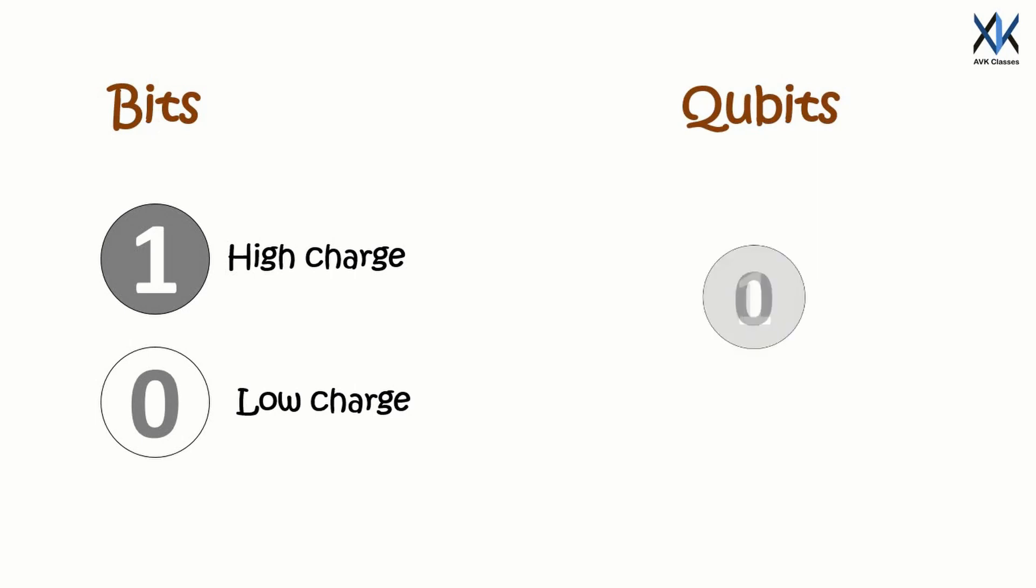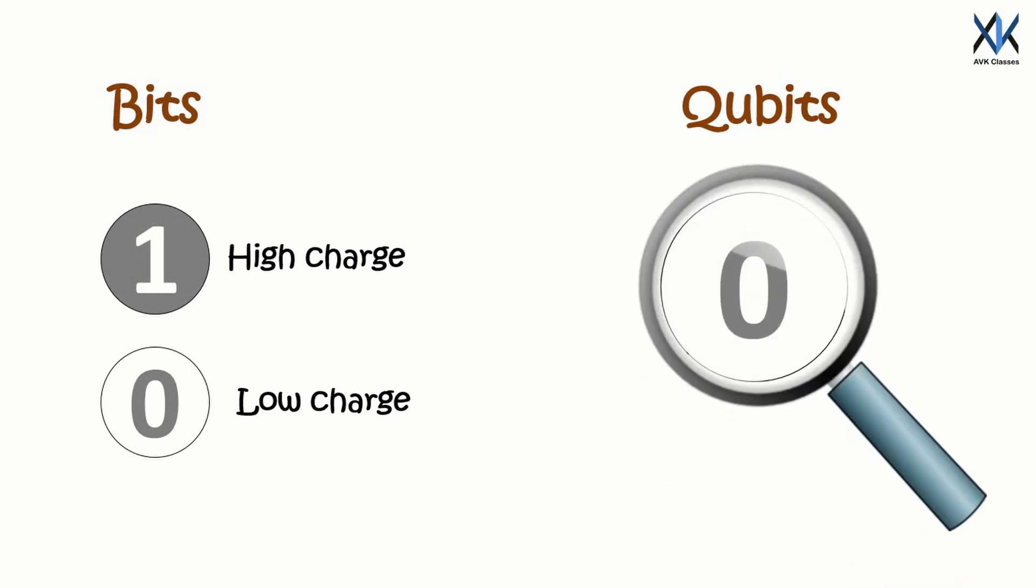Qubits exist in a state of superposition. That means it is both 1 and 0 at the same time. But when we measure a qubit, its value will collapse to a single value.